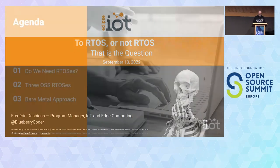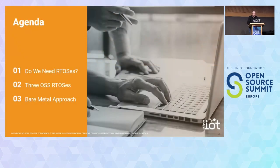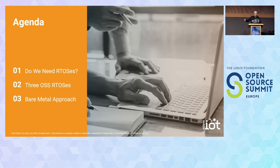So let's get started. There are three steps in our little process today. We'll think a bit about what OSes bring to the table and why we would need them or not. After that I will present three specific open source real-time OSes, and then have a look at a few alternatives for bare-metal approaches, so without an OS. Ultimately, after that you go to the market and build great solutions using whatever makes sense for you.